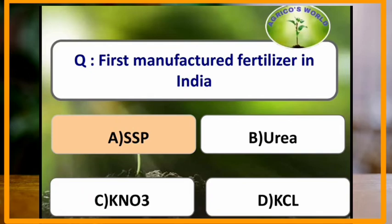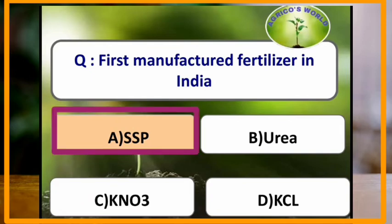First manufactured fertilizer in India is single superphosphate. Single superphosphate is the first manufactured fertilizer in India.